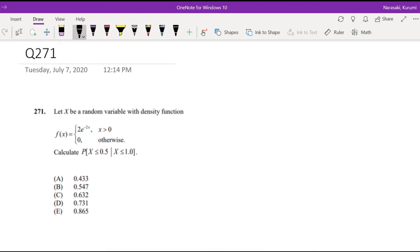Assuming that you already have time to do it, let's just dive right in. Let x be a random variable with density function given here. Calculate the probability of x is less than 0.5 given x is less than 1.0.